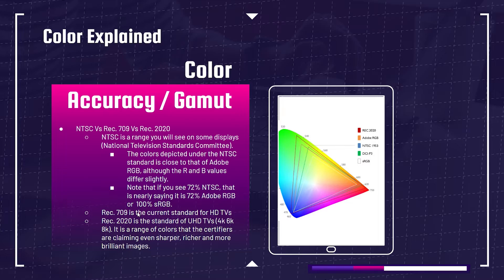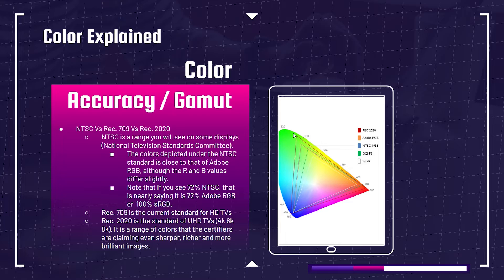Rec.709 is the current standard for HDTVs, so you'll see this on TVs or monitors made for video editors. Rec.2020 is the becoming standard for Ultra HDTVs — like 4K, 6K, 8K. It's a range of colors that certifiers claim will produce even sharper, richer, and more brilliant images. So if you're a video editor and want to test your video projects on an actual TV, a Rec.709 or Rec.2020 TV with a high range will give you really good color accuracy. It covers the largest spectrum on the color gamut chart.